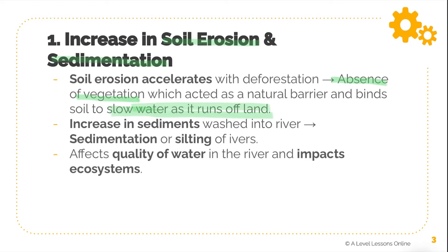This leads to an increase in sediments that can be washed into a nearby river. The Amazon rainforest is a very clear example. It can lead to sedimentation or silting of rivers — basically a piling up of sediments in the river that can cause blockages and harmful effects on biodiversity. These sediments may block certain passageways in the river, harm aquatic life, and affect the quality of water, impacting the flora and fauna found in the river itself.